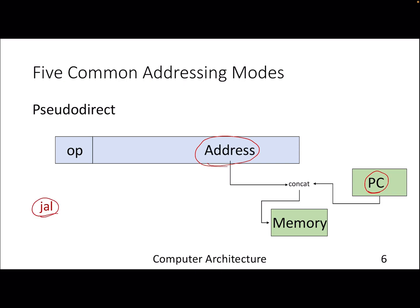Collectively, it will give you an address from which you will actually get your operand. In this case, the operand is again you are jumping into some subroutine, so you will actually jump to that particular address in memory.